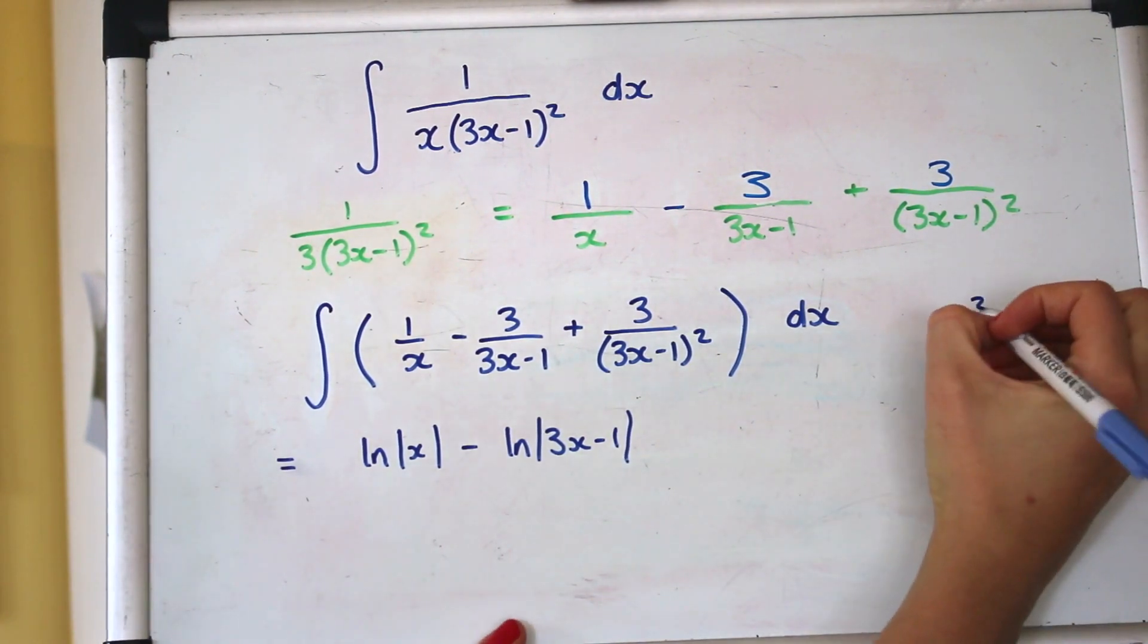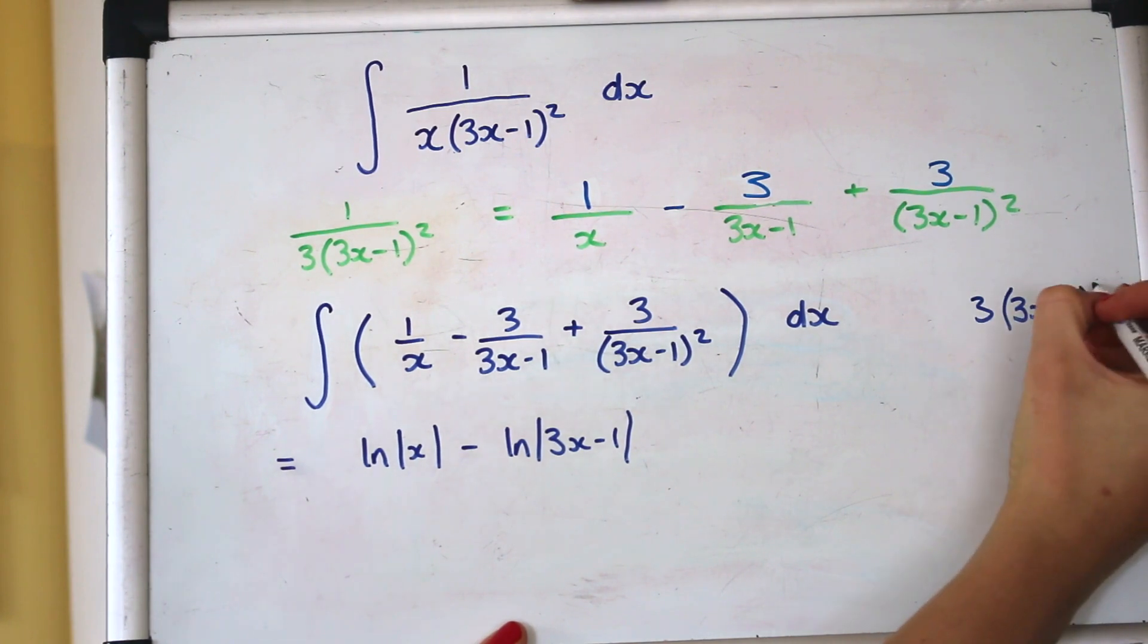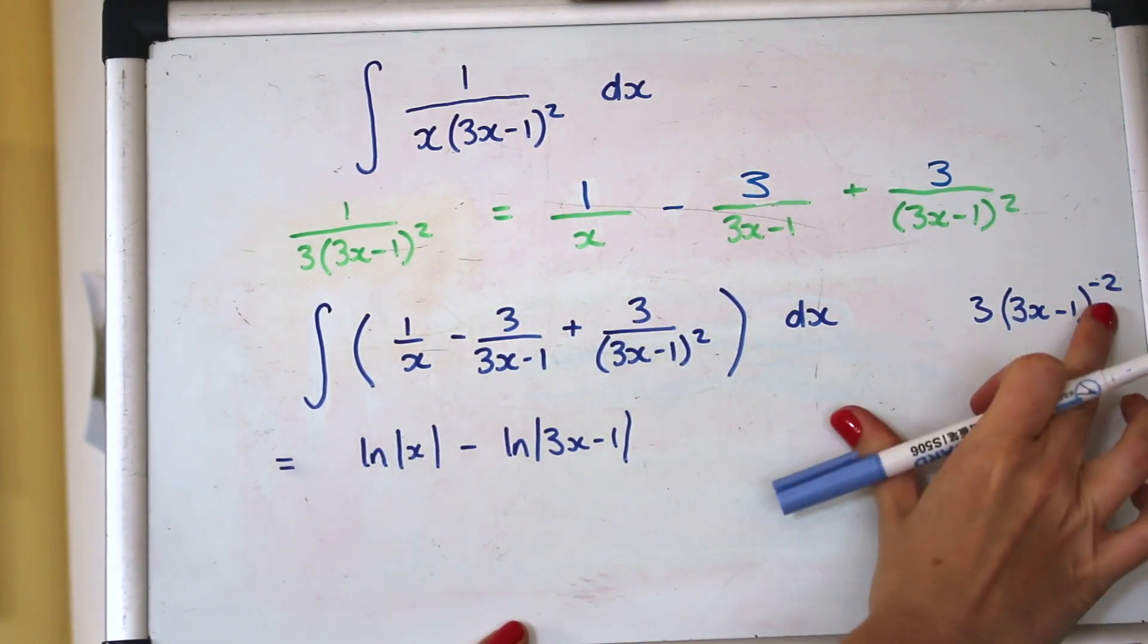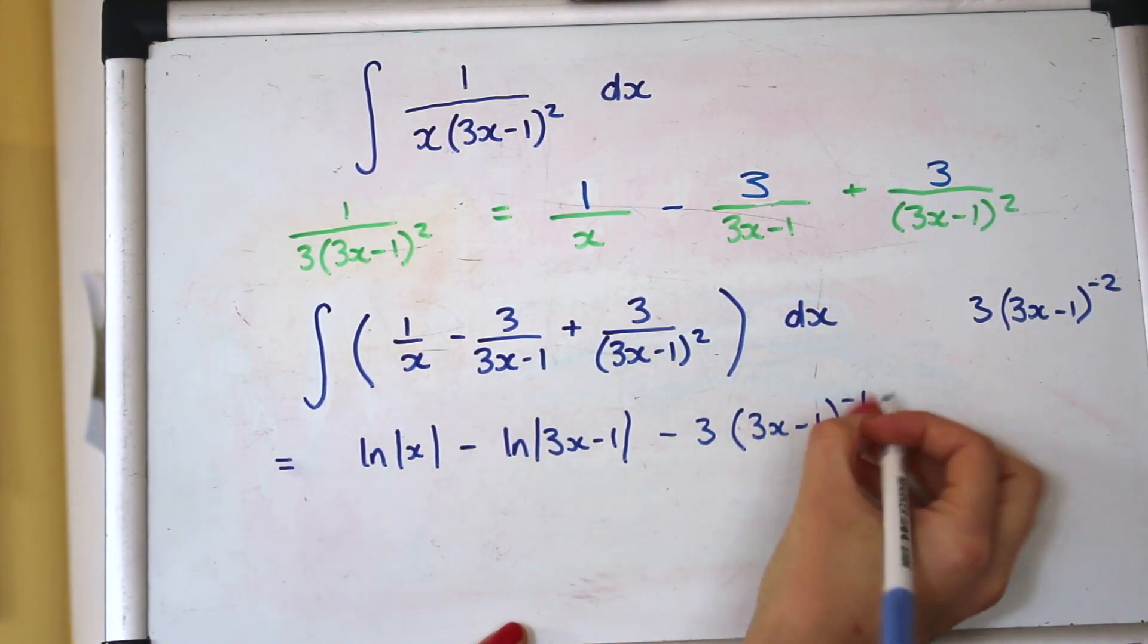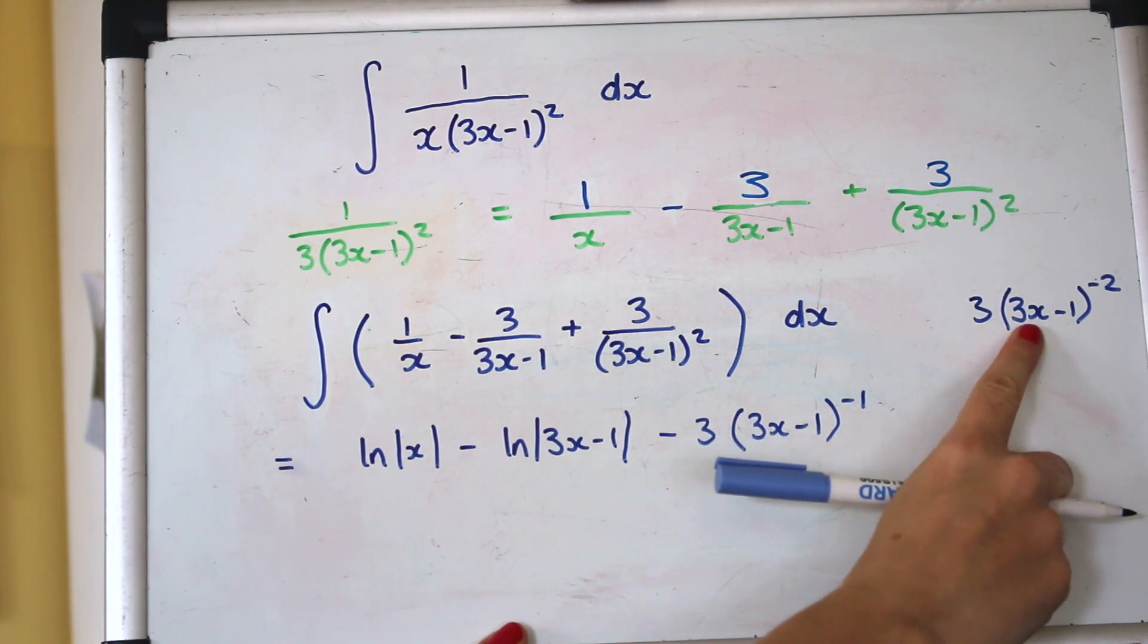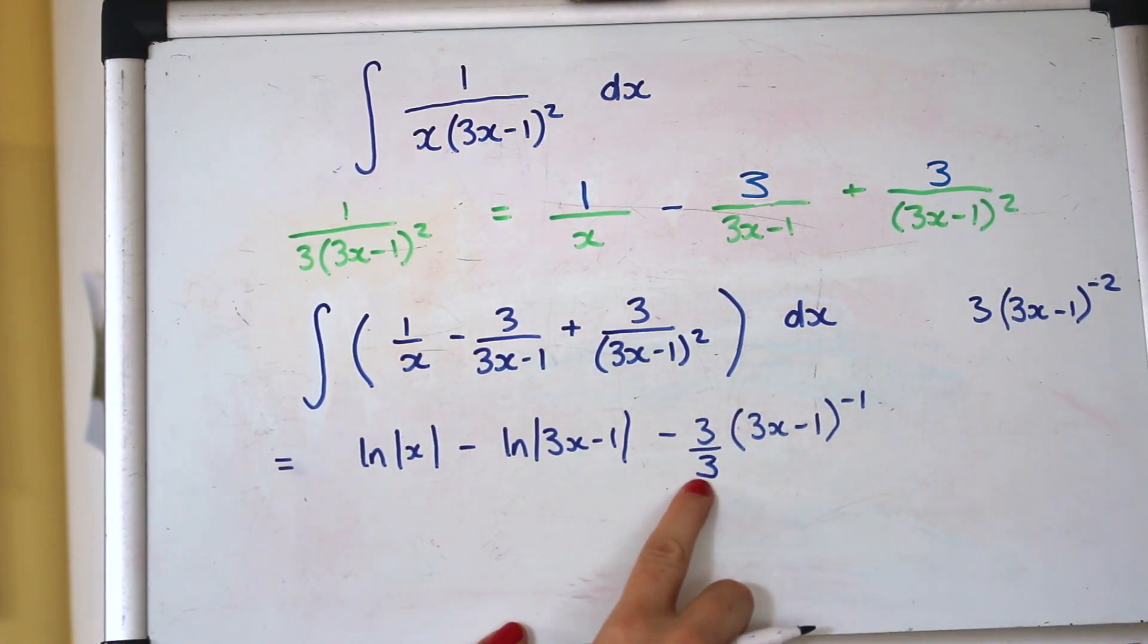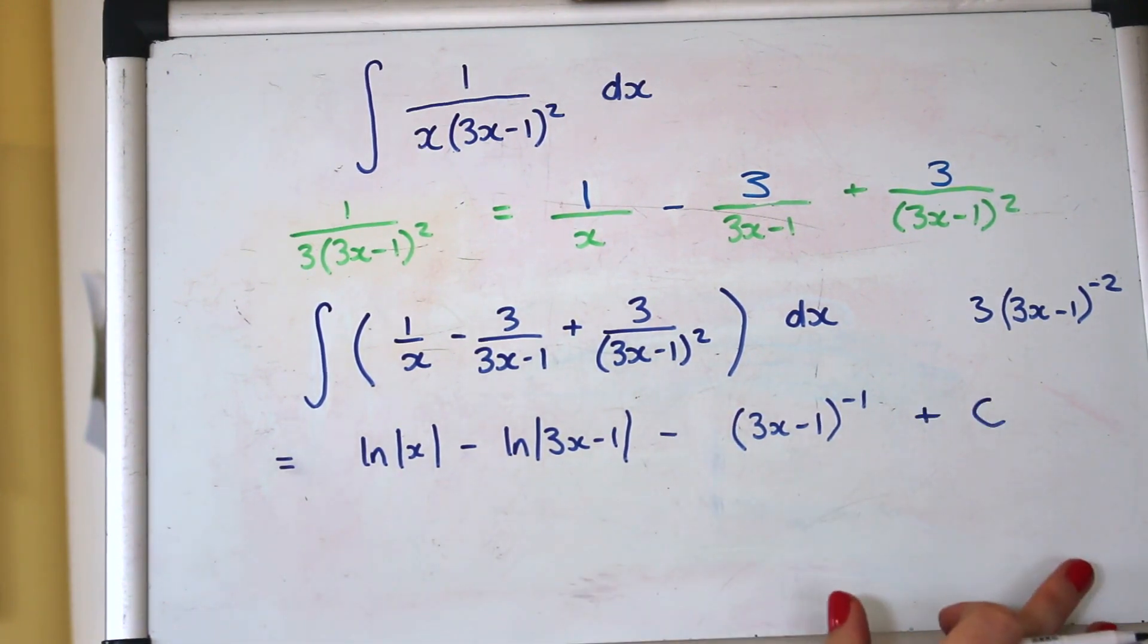So it might help you to write the power at the top so we've got 3x minus 1 to the power of negative 2 so we're integrating that. So we need to raise the power by 1 and then divide by the derivative of the inner which is 3. Again happily that cancels the 3 at the front out so that just vanishes.